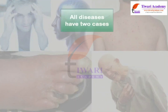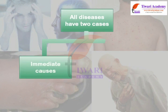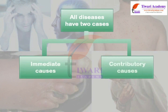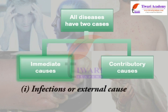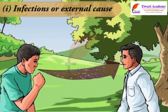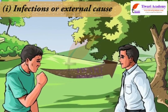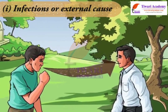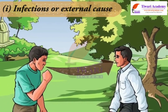All diseases have two causes: immediate causes and contributory causes. Immediate causes are of two distinct types: infections or external causes, and non-infectious or internal causes. Infectious causes are external or extrinsic factors which reside in our surroundings and cause diseases.